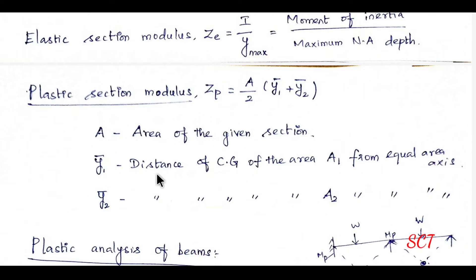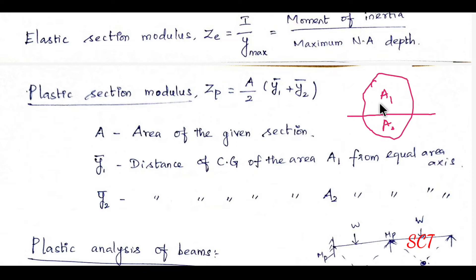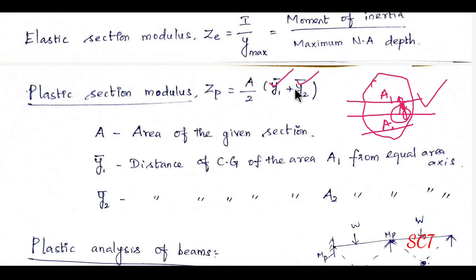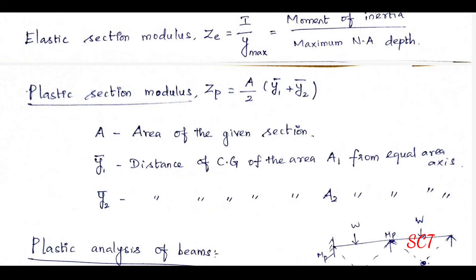ȳ₁ is the distance of the center of gravity of area A1 from the equal area axis. For an unsymmetrical section, we take the equal area axis such that the area above equals the area below. ȳ₂ is the corresponding distance for area A2 below the equal area axis. For a symmetrical section, ȳ₁ equals ȳ₂, so Zp simplifies to A × ȳ₁.